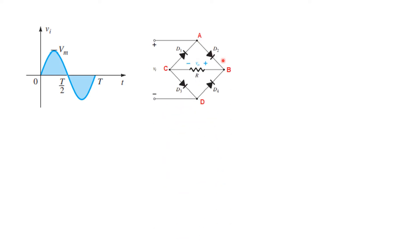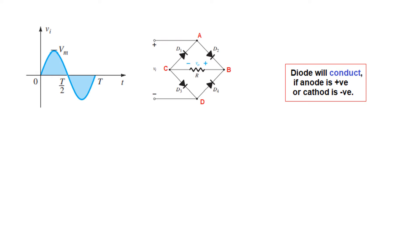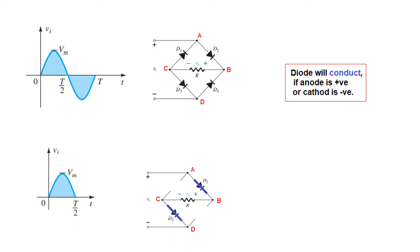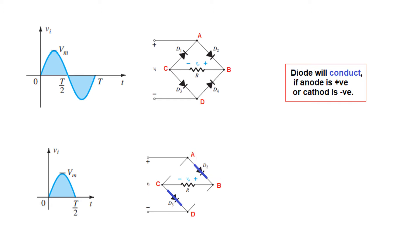This is the bridge rectifier circuit. I'll mark the terminals A, B, C, D. Keep in mind: a diode will only conduct if the anode is positive — so look for the anode. If this anode is positive, this diode is forward biased and the other is reverse biased. Similarly, if the cathode is negative, whichever cathode is made negative becomes forward biased, and the other becomes reverse biased. So for the positive half cycle these two diodes are forward biased.